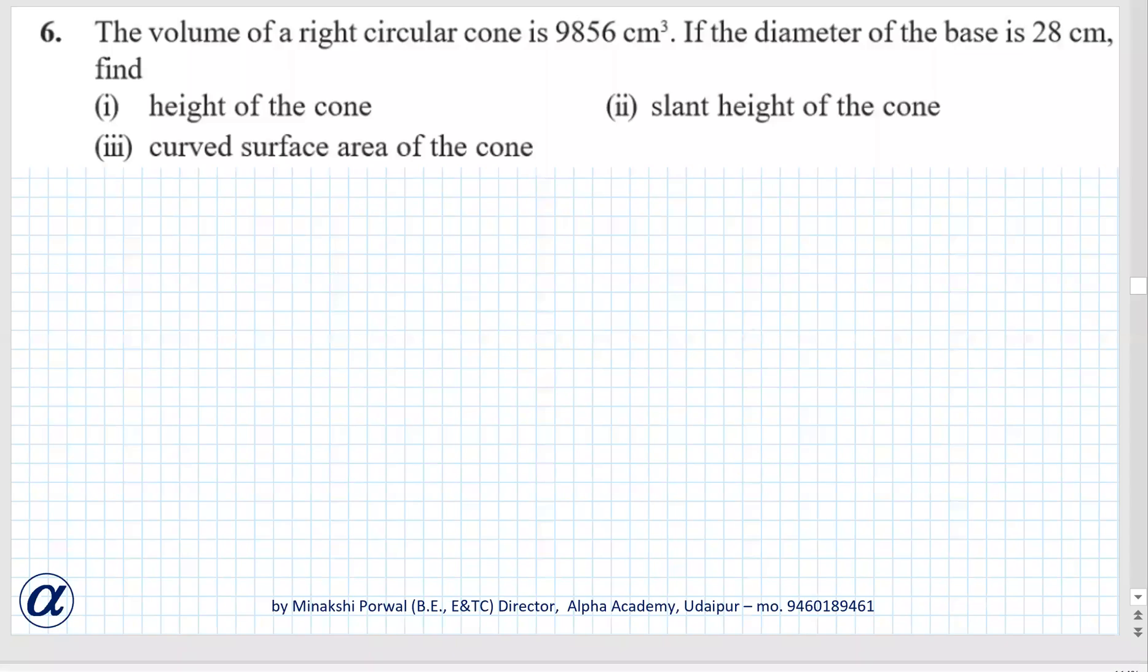Exercise 13.7, question number 6. Volume of right circular cone is 9856 cm³. Diameter of base is 28 cm. So radius will be half of it, that is 14 cm.